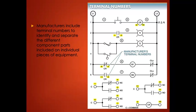Manufacturers include terminal numbers to identify and separate the different component parts of individual equipment. The numbers at the bottom of a control relay — for example, 2 and 10 — represent the actual terminals you're connecting to. Wire number two goes to terminal number two on the control relay; wire number three goes to terminal number 10.